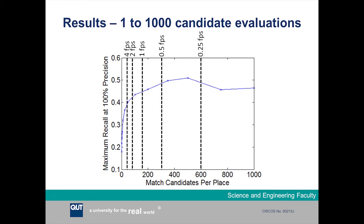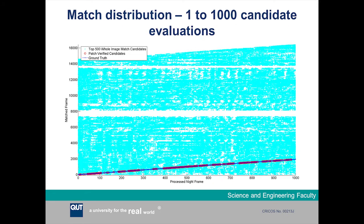Performance pretty much maxes out above about 200 or 300 candidates, and we maintain about 40% to 50% recall at 100% precision from that point onwards. The coverage graph shows the thousand frames from the second traverse on the x-axis and frames from the first traverse on the y-axis. Correct matches from the second traverse back to the first traverse are shown with red circles, with the largest gap being about 44 metres, compared to a gap of more than a kilometre in the original SeqSLAM study.